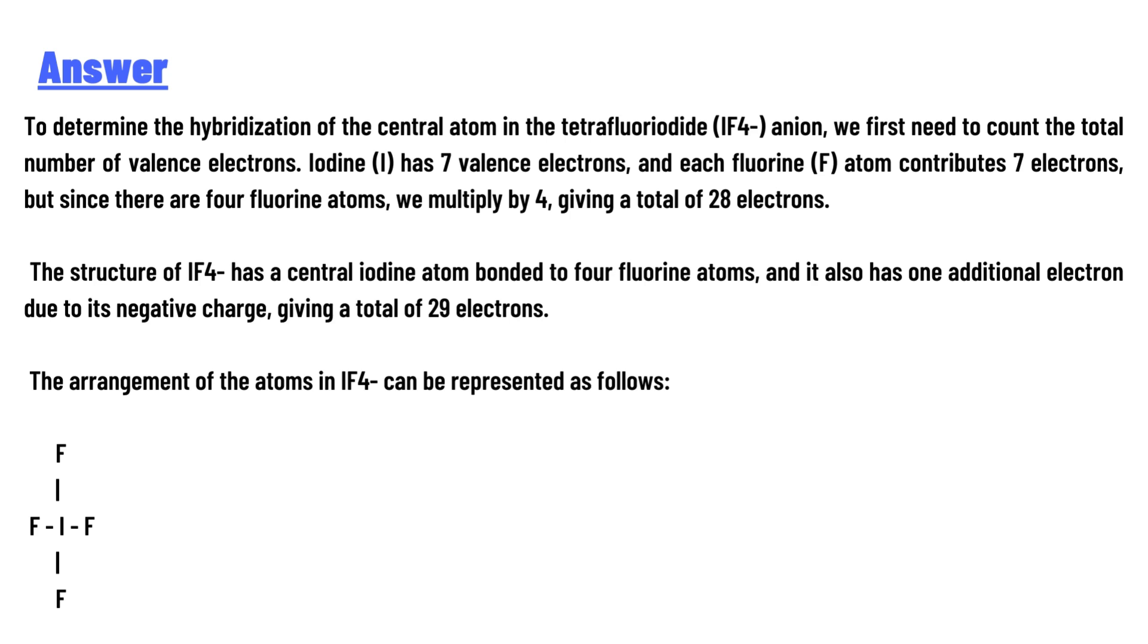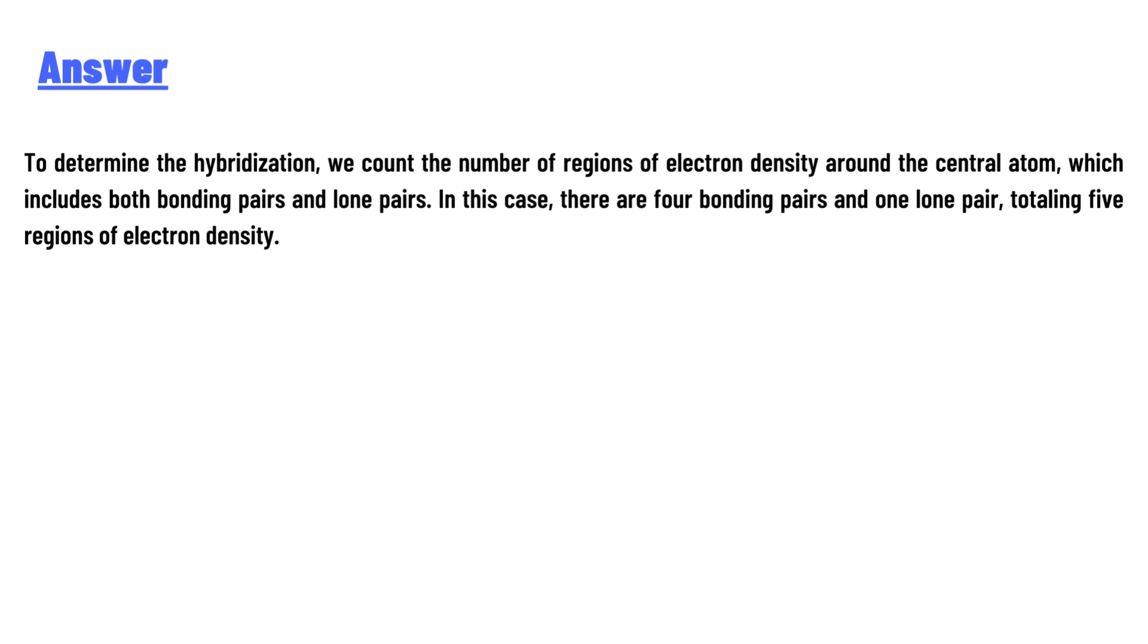The arrangement of atoms in IF4- can be represented as follows. To determine the hybridization, we count the number of regions of electron density around the central atom, which includes both bonding pairs and lone pairs. In this case, there are four bonding pairs and one lone pair, totaling five regions of electron density.